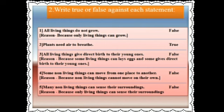Now the second question: write true or false against each statement. First one: all living things do not grow. This statement is false, because only living things can grow — non-living things do not grow. Second one: plants need air to breathe. This statement is true, because plants are living things, so they need air to breathe.